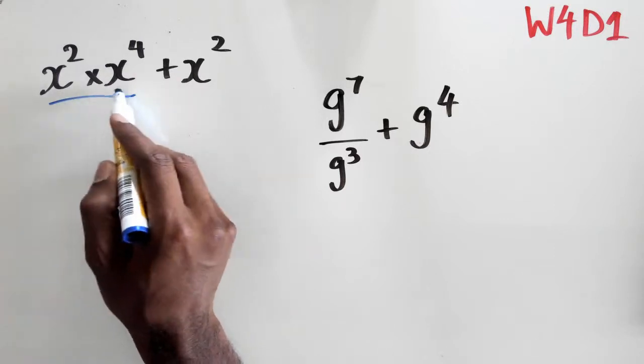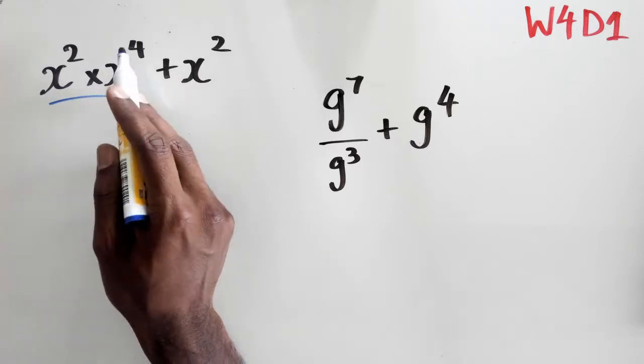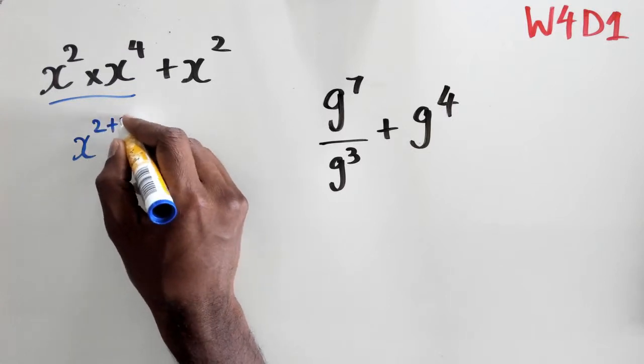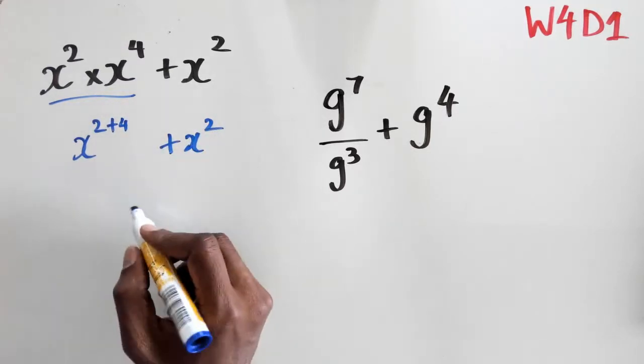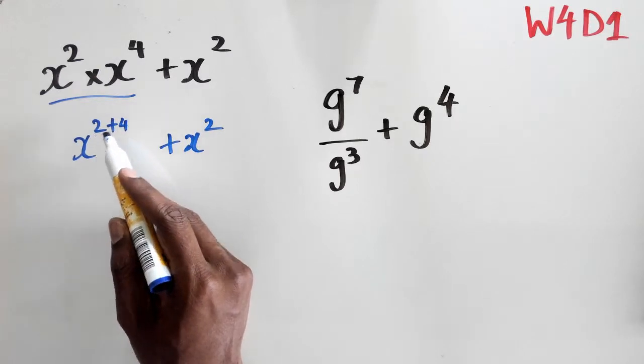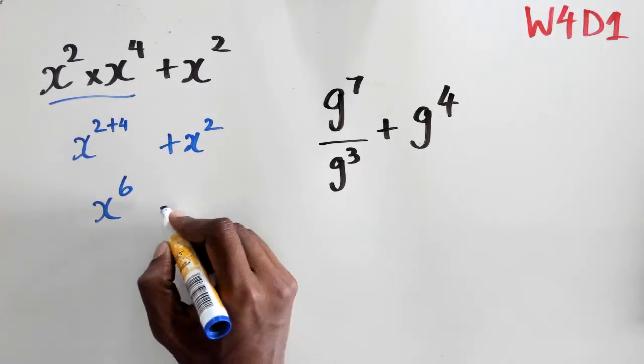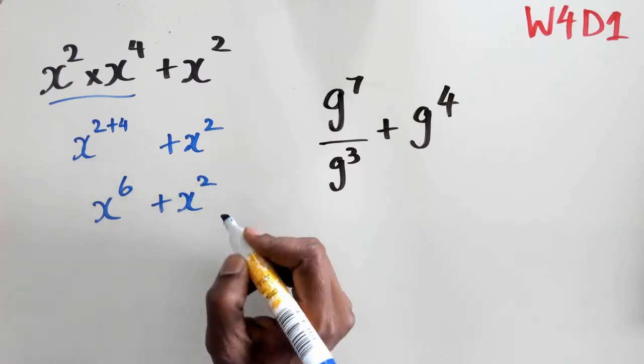So I'm going to do the multiplication of these two terms first. I've got x squared times x to the power of 4, which is x to the power of 2 plus 4. And as for the x squared, I'm just going to leave it as it is. In this case, I've got x to the power of 2 plus 4, which equals x to the power of 6 plus x squared.